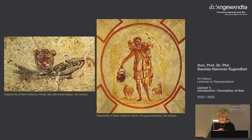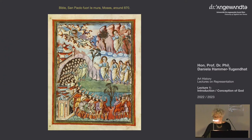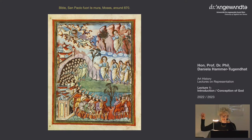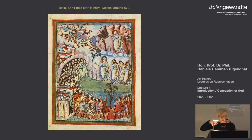You see also in Carolingian miniatures, God just shown with a hand — God giving the commandments to Moses. On the right edge you see the hand of God; you don't see God, but just a hand.